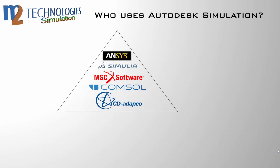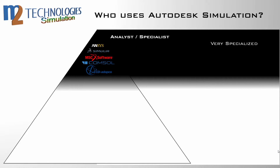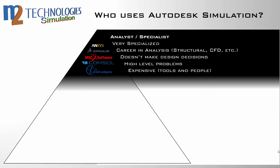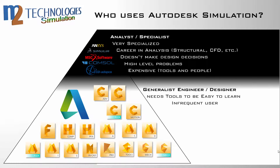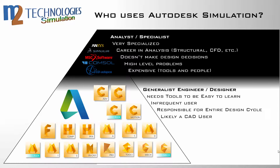Note the triangle graphic on screen — this triangle represents the entire community of engineers and designers. Traditionally, highly educated and highly specialized individuals, represented by the top portion of the triangle, have been relied upon to perform FEA analysis. These individuals are typically career analysts — expensive people who use expensive tools — and this type of analysis is often done at the end of the design cycle for validation purposes. Autodesk simulation is part of a newer approach called upfront simulation. It's for the everyday engineer and designer who often wears many hats, and for whom running analysis software may only be a part-time role. They need results early in the design process to make more informed decisions, and they need the tool to be easy to learn and easy to use.